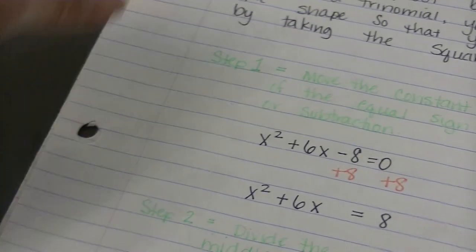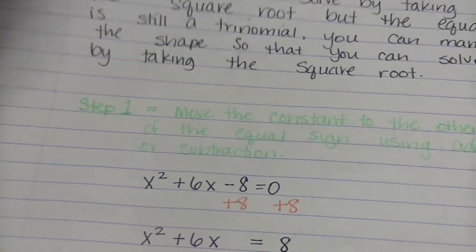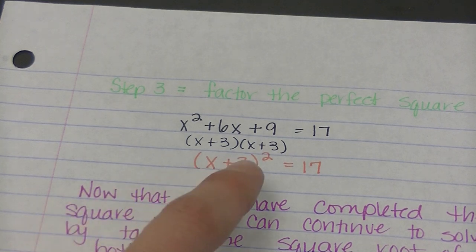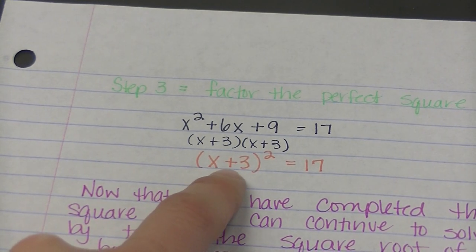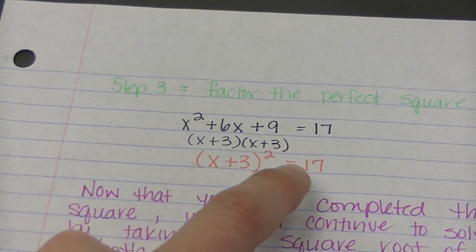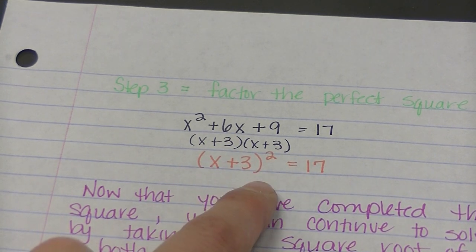So to factor that, the two numbers that would multiply to give me 9 but add to give me 6 are 3 and 3, hence that whole perfect square situation. So I've got x plus 3 squared equals 17. Now you can take the square root of both sides and subtract 3 to solve by completing the square.